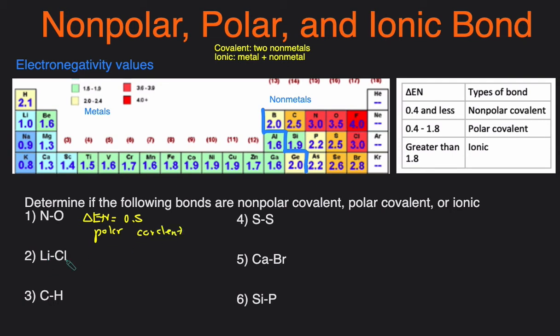Next one, Li-Cl. Let's just check whether it's ionic or covalent first. Li is a metal, and Cl is a non-metal. So since it's metal and non-metal, then it has to be ionic.